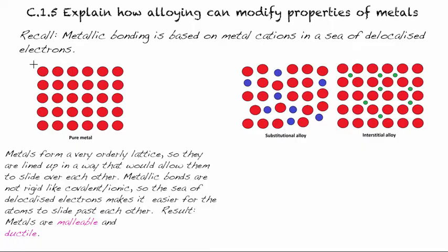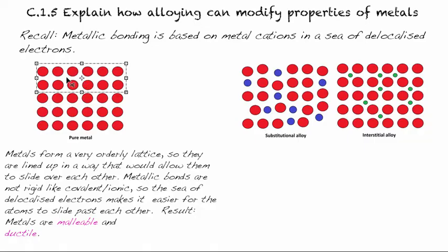And so if we were to visualize here basically adding a stress, like maybe pushing over here, what happens is because of the way they're organized, they can just slide along. And you can sort of think of those delocalized electrons as really kind of like a little bit of a lubricant, allowing those metal cations to just slide by each other. So the metallic bonds are not rigid like the covalent and ionic compounds we are familiar with. The sea of delocalized electrons makes it easier for the atoms to slide past each other.